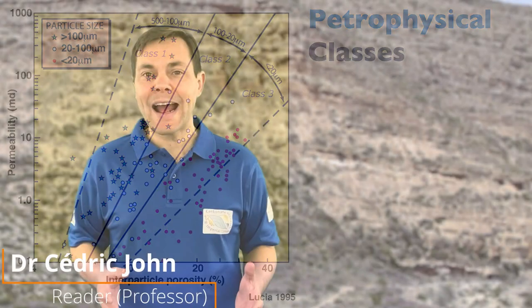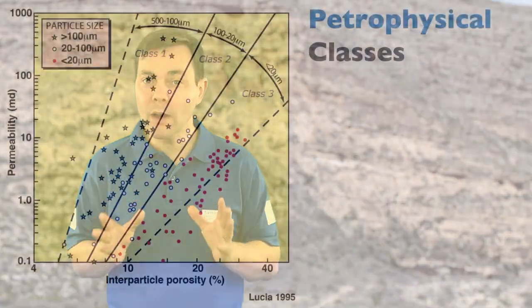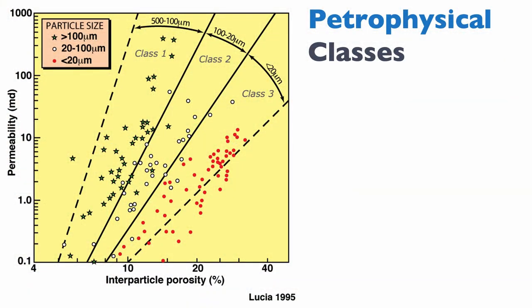Let's look at the relationship between petrophysical classes and the Dunham classification. One important point to stress is that the three petrophysical classes that Lucia has come up with are only valid for matrix porosity and permeability, not for the VOGS. The VOGS need to be determined separately, which is one of the weaknesses of the approach.